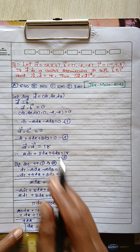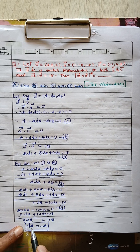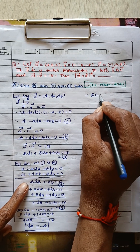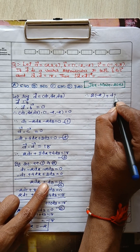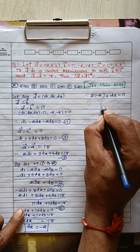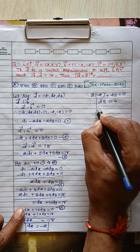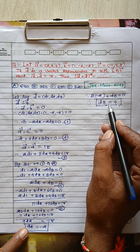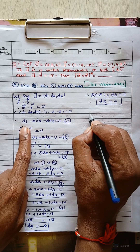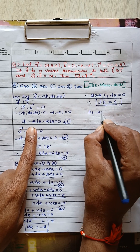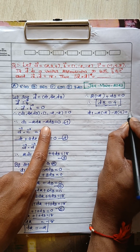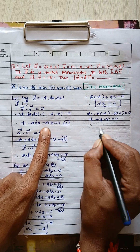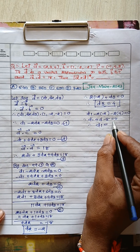Substituting d2 equals minus 2 into Equation 4, we get 2 times minus 2 plus d3 equals zero, which gives d3 equals plus 4. Now substituting d2 and d3 into Equation 1, we get d1 minus 2 times minus 2 minus 2 times 4 equals zero, giving d1 plus 4 minus 8 equals zero, so d1 equals plus 4.